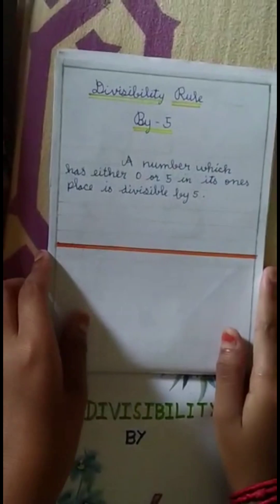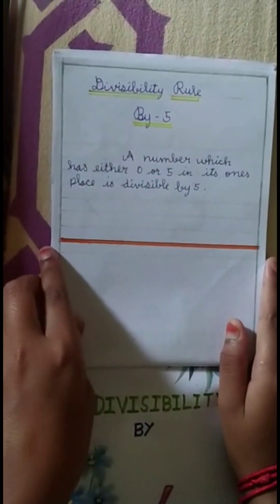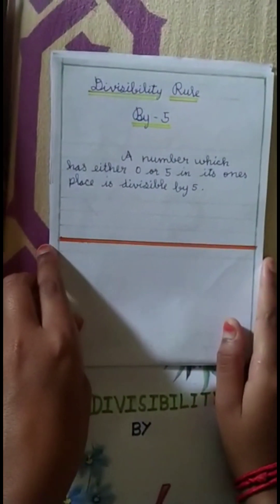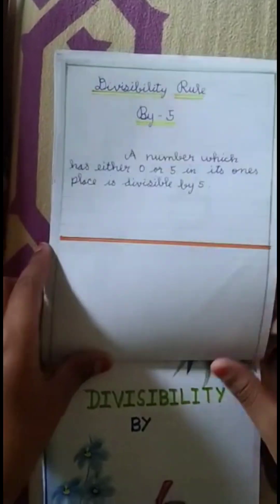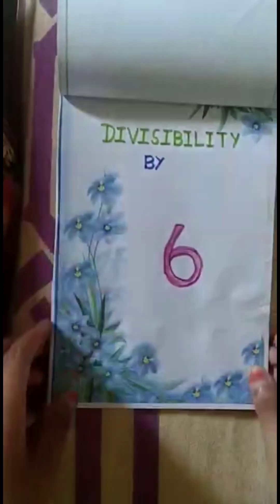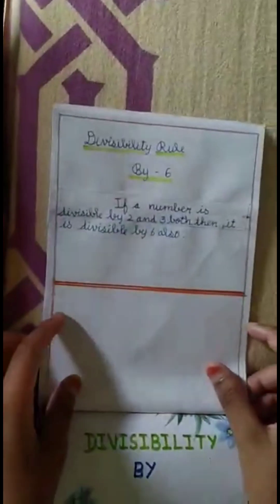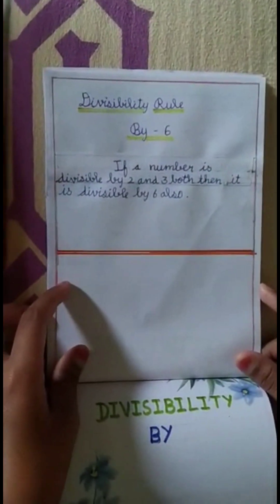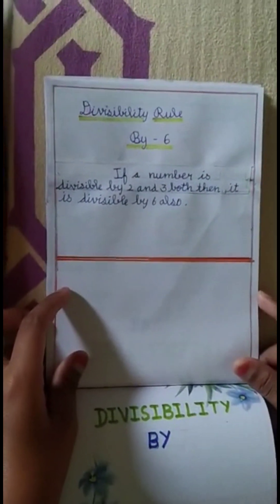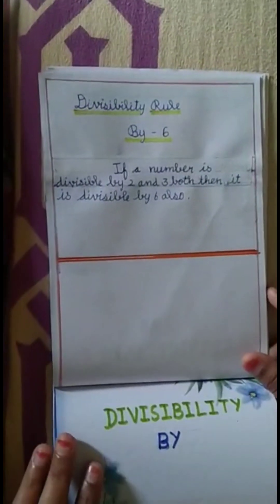Divisibility by 5: a number which has either 0 or 5 in its ones place is divisible by 5. Divisibility by 6: if a number is divisible by both 2 and 3, then it is divisible by 6 also.